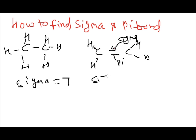So sigma bond is equal to 1, 2, 3, 4, and 5. And pi bond is equal to 1.